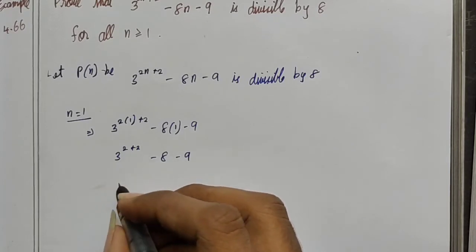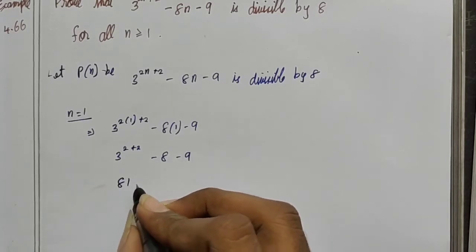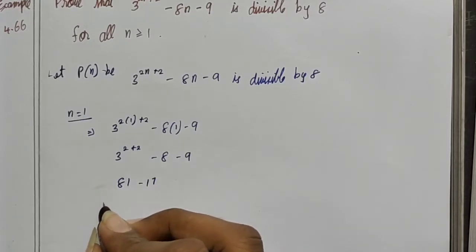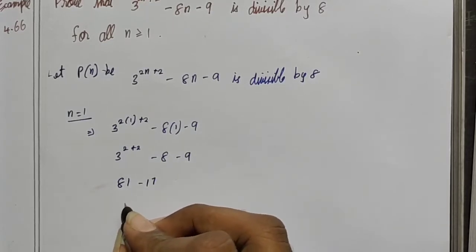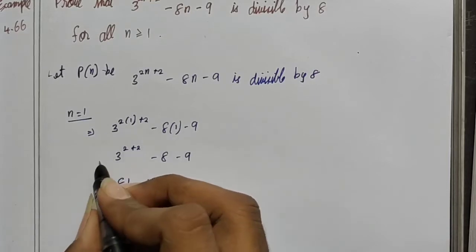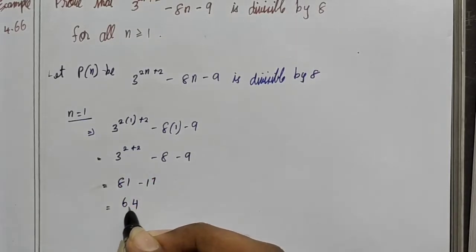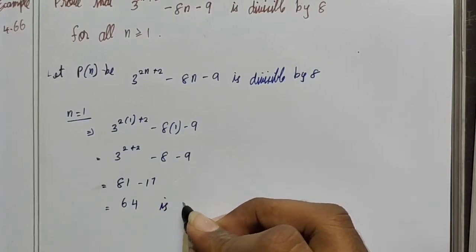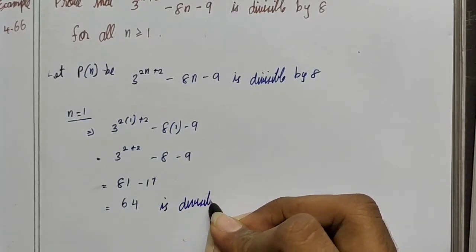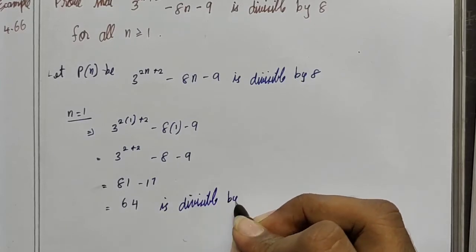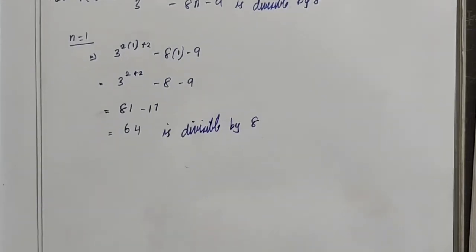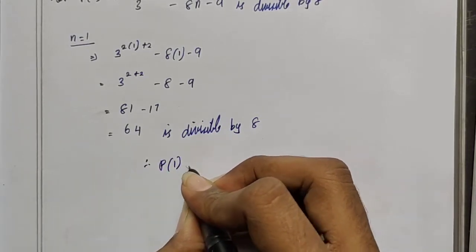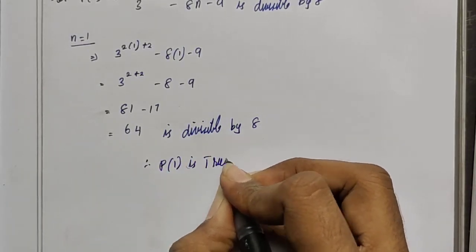3 square is 9, so 9 into 9 is 81. So 81 minus 8 minus 9, that is 81 minus 17, is 64. Now 64 is divisible by 8. So the statement is true. Therefore P of 1 is true.